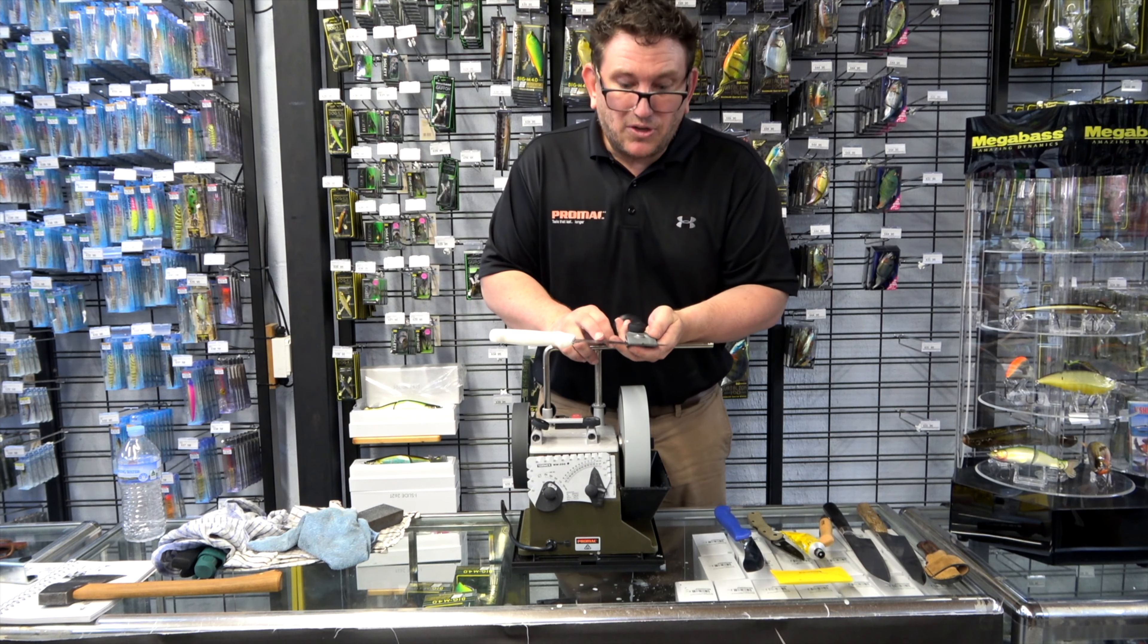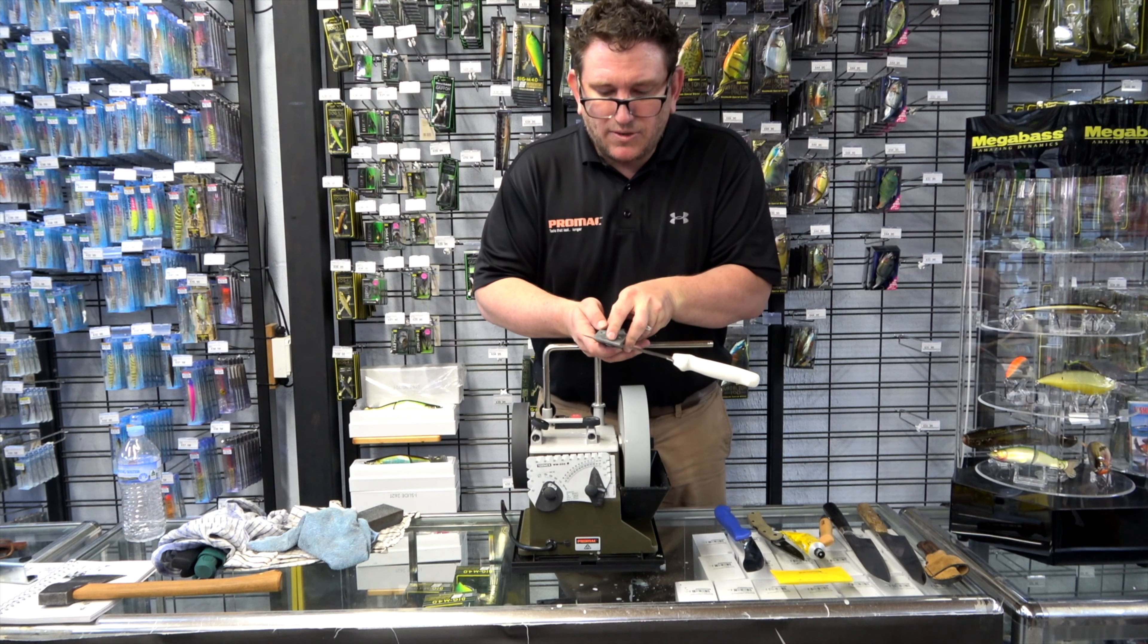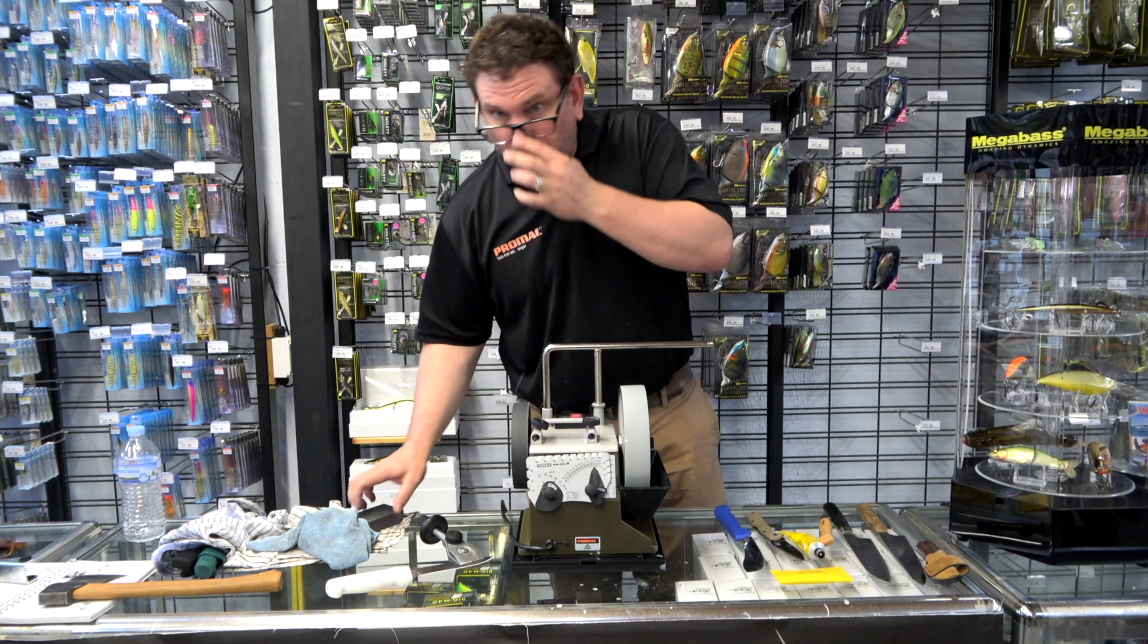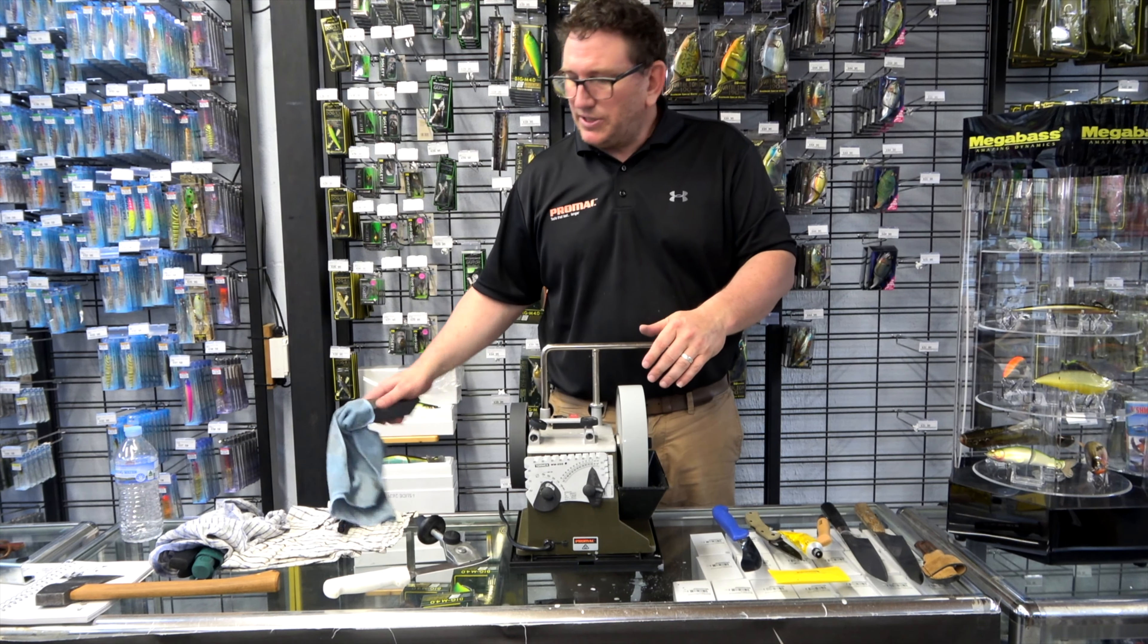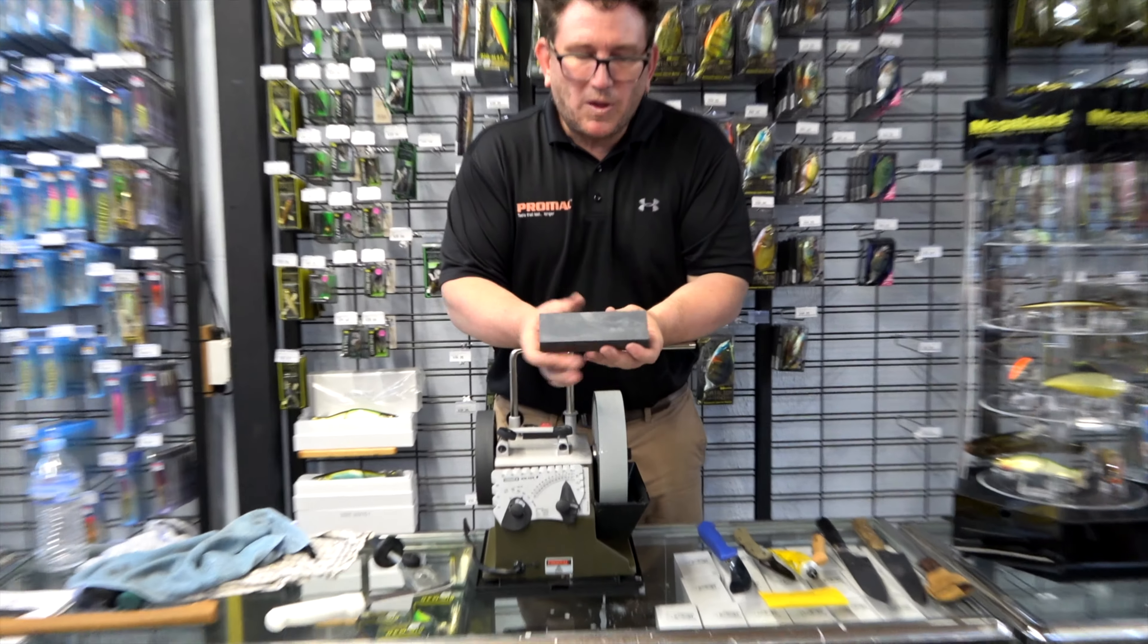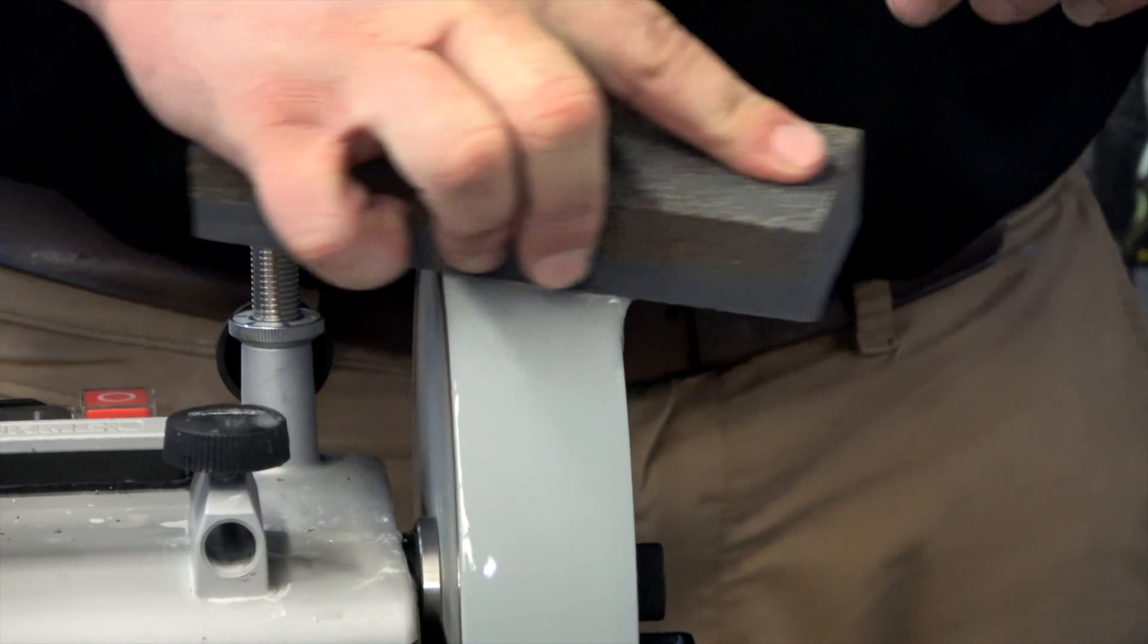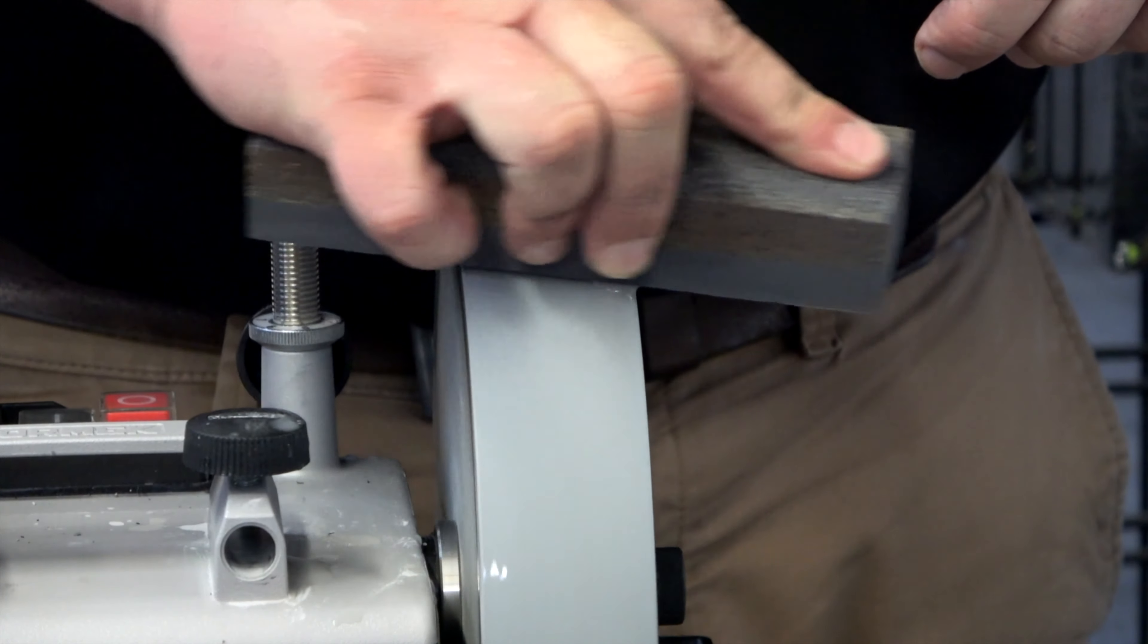Now that we've created our edge on the 220 grit and it's nice and symmetrical, we're going to take the wheel from 220 to a thousand grit. By using the stone grater, we're going to use a smooth side. And we're going to polish up the ceramic particles on the wheel to take the wheel to the thousand grit.